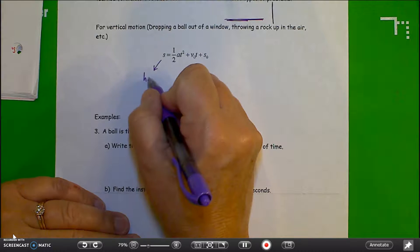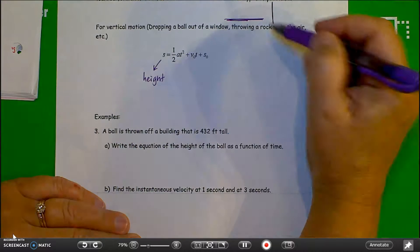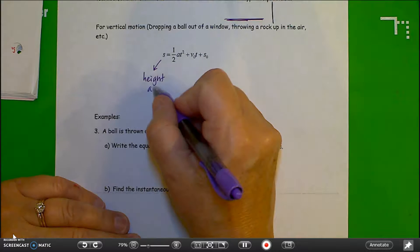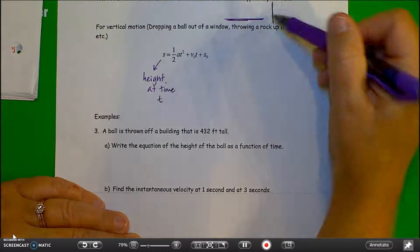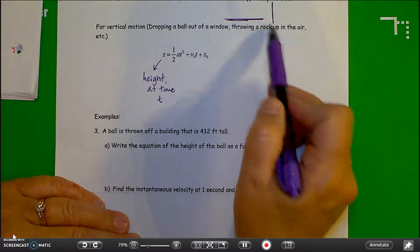S is going to be the height at time T. So that's what we'll be looking for now is the height, not the position on the number line, but rather the height.